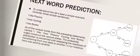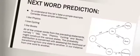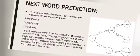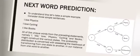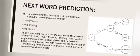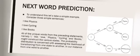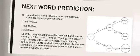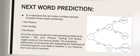Next word prediction example: to understand this, let's take a simple example. Consider three simple sentences: I like physics, I love cycling, I like books. All of the unique words from the preceding statements—namely I, like, love, physics, cycling, and books—might construct the various states.